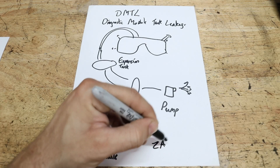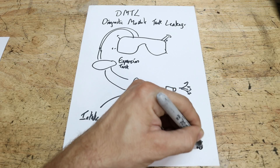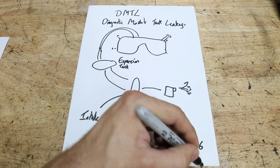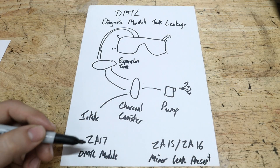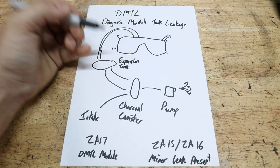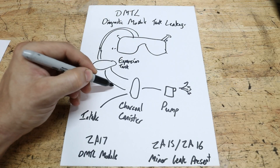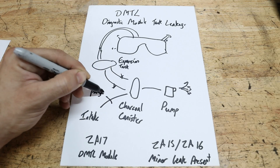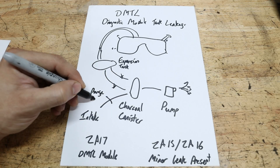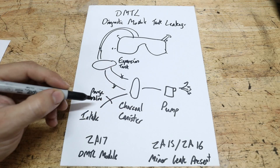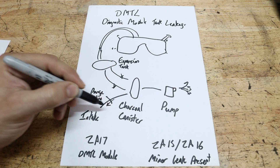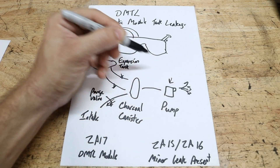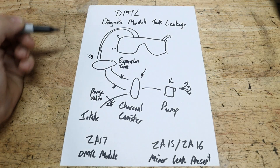The other fault you can get is a 2A15 or 2A16 fault code, which indicates a minor leak present in the system. You might think there's a hole or damage to your fuel tank, but usually it's going to be a break in one of the lines. Sometimes the purge valve — which goes between the charcoal canister and the intake — could be letting gases escape if it's old, failing the test. Or you might have a component of the pump leaking, the charcoal canister, or the expansion tank.